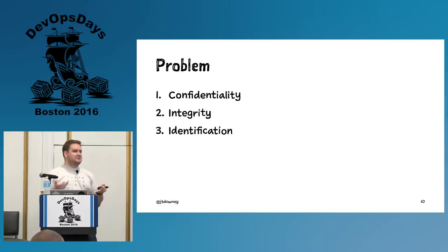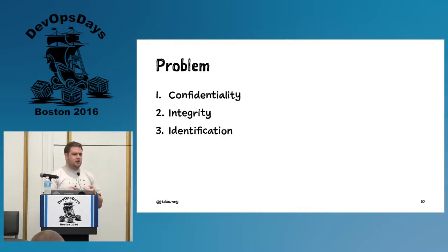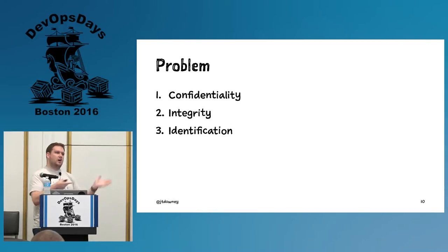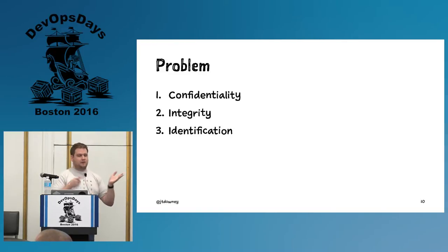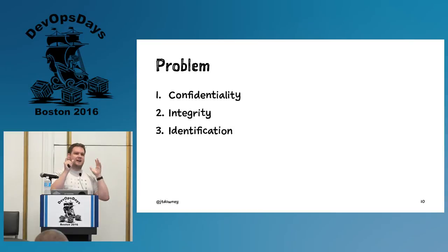Why do we even do it? When we're shopping online or sending sensitive information — healthcare or financial — our users expect three things. They expect confidentiality: no one along the way should be able to read it if they're not supposed to. They expect integrity: nobody can change things without it being detected. And identification: if we go to Amazon.com and put in our credit card number, the browser has validated that we're actually talking to Amazon.com and not some phishing website.